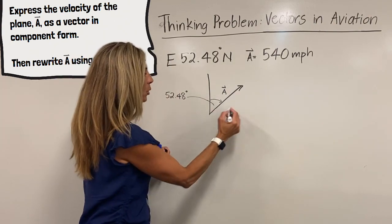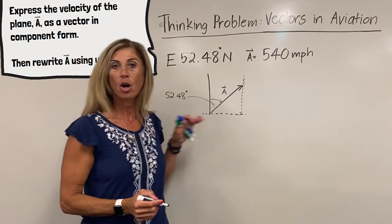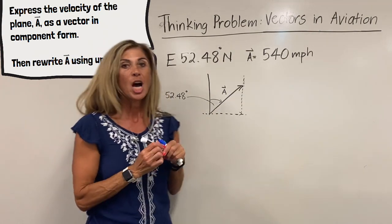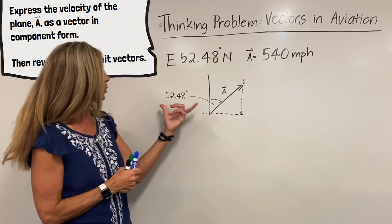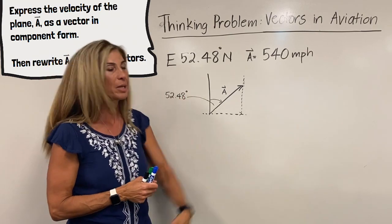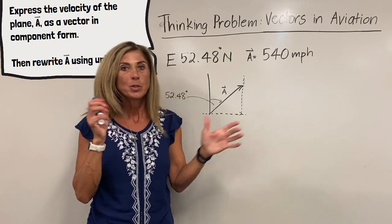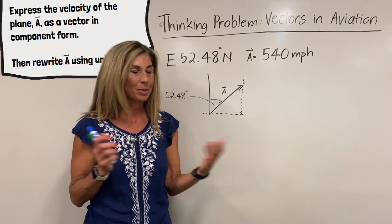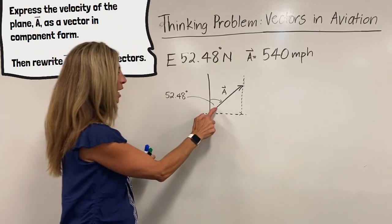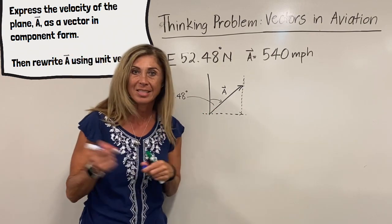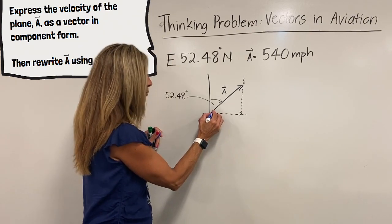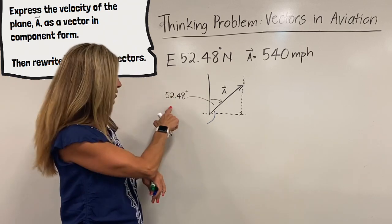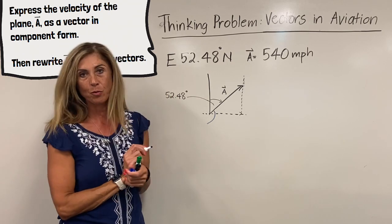we want to know the components of this vector in the horizontal direction and the vertical direction. A common error is that students will take this angle and plug it into A cosine theta, A sine theta, just as we've done in right triangle trigonometry. However, the angle that we actually have in this included right triangle happens to be 90 minus 52.48 degrees, which is 37.52 degrees.